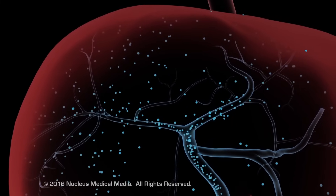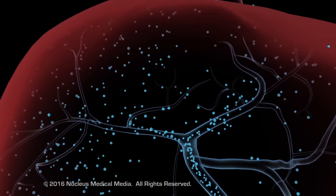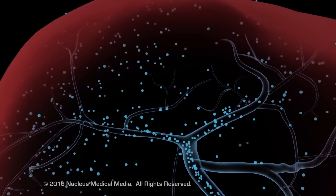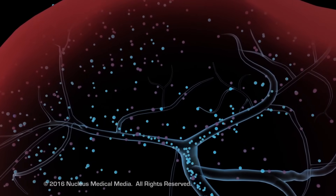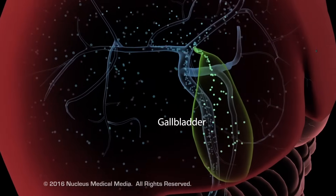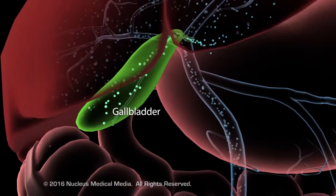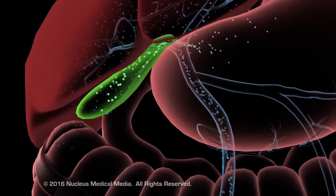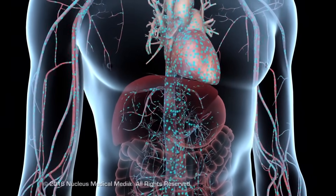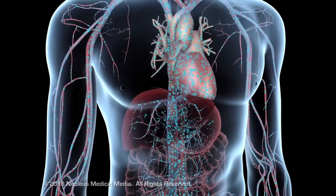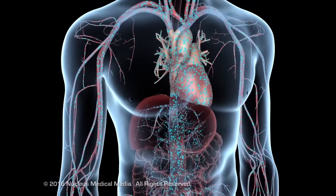During this process, the liver metabolizes some of the drug, either inactivating it or excreting it into bile for elimination from the body. The remaining amount of active drug leaves the liver and reaches general circulation and target organs.